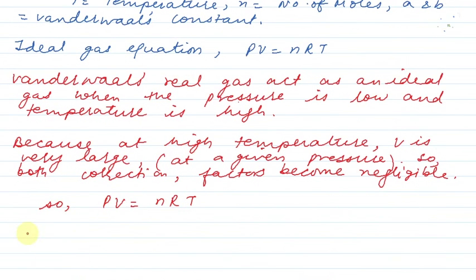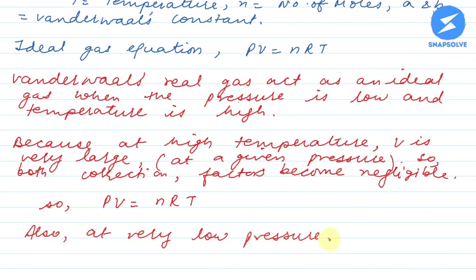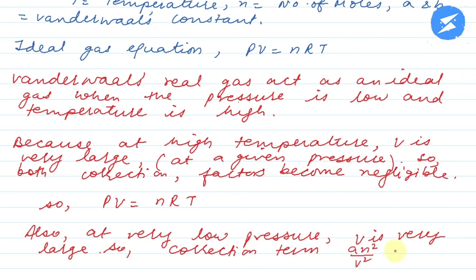So, at very low pressure, if pressure is reduced, Boyle's Law says that the volume is very large. And when the volume is large, the correction term is very small. Which correction term? a n squared by V squared. It will be very small.